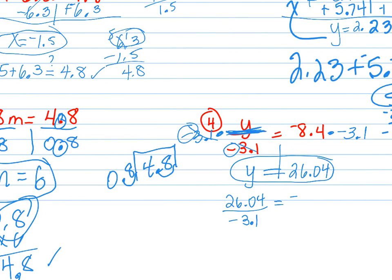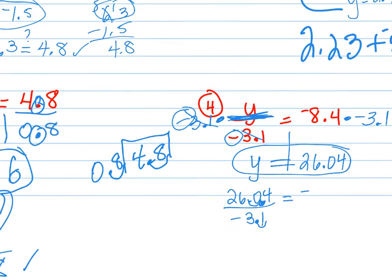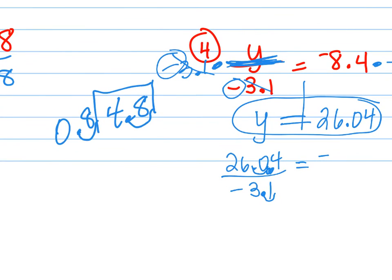Now, you have to check it by taking 26.04 and dividing by negative 3.1. What's a positive divided by a negative? Negative. And then, can we divide by 3.1? How many of you can just move that like that there one time and move it here one time and see that that's how you're really doing it? Can you guys see that? See how we're dividing by 3.1? Well, we can't divide by a decimal. So, I move it one time in each one. So, it's really going to be 260.4 and we're going to divide by 31. So, tell me what you get when you divide those.